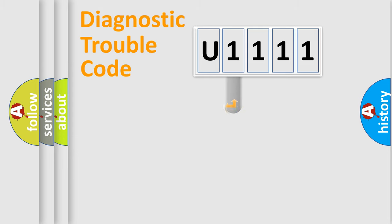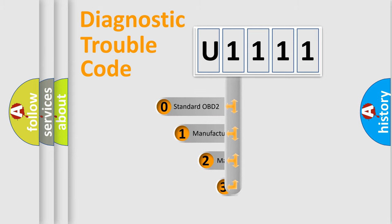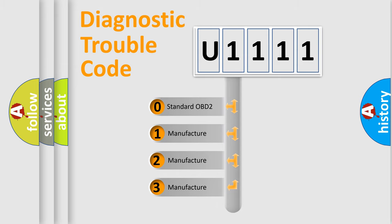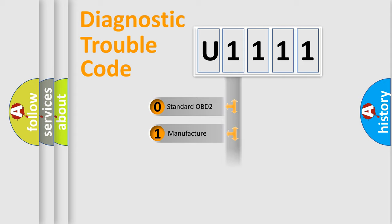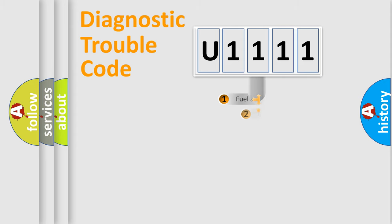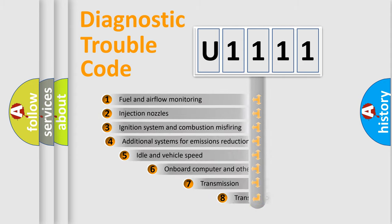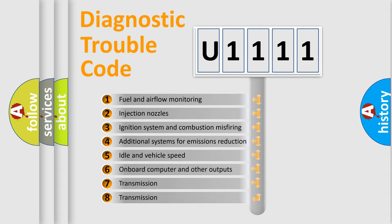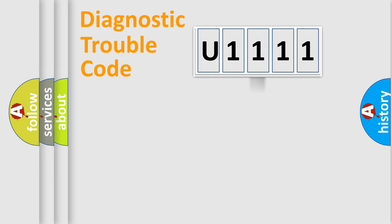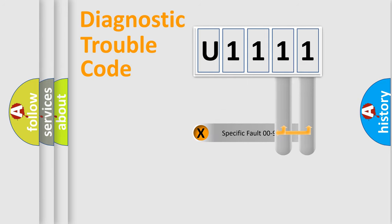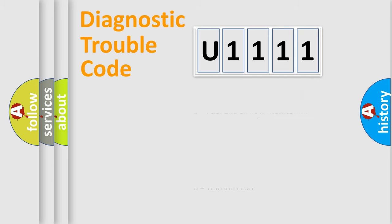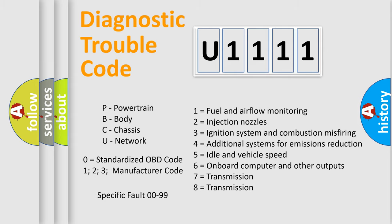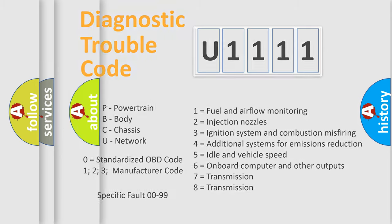This distribution is defined in the first character of the code. If the second character is expressed as zero, it is a standardized error. In the case of numbers 1, 2, or 3, it is a manufacturer-specific error. The third character specifies a subset of errors, and this division is valid only for the standardized DTC code where the second character is zero.